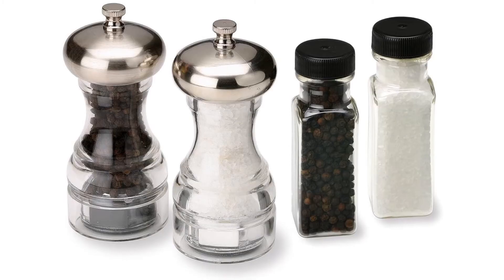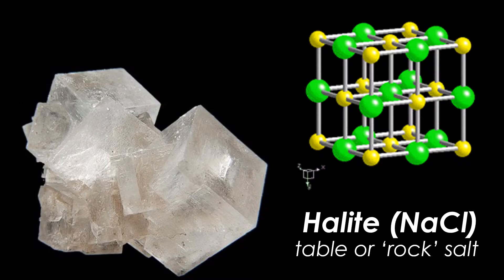Let's consider a few familiar minerals. Did you or your family ever use a salt grinder? Table salt or rock salt is a mineral called halite. Its chemical composition — sodium chloride — may be familiar to you. It has a very simple cubic crystal lattice structure, illustrated here.